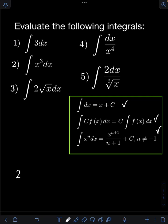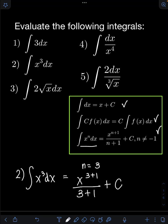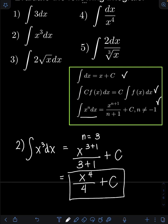For number 2, we have the integral of x cubed dx. We apply the third formula, which is the power rule. Our n here is 3. Applying the formula, we have x raised to 3 plus 1 over 3 plus 1, plus c. Simplifying, that gives us x raised to 4 over 4, plus c. So therefore, the final answer is x to the fourth over 4, plus c.